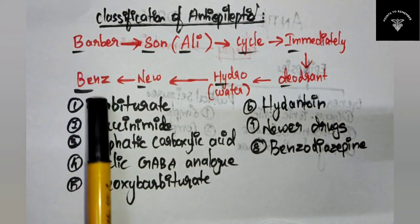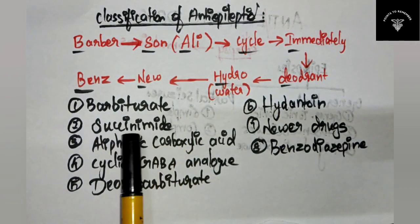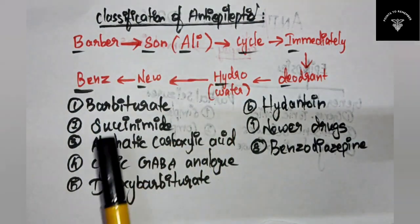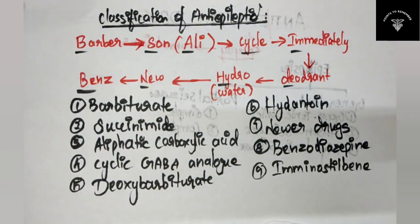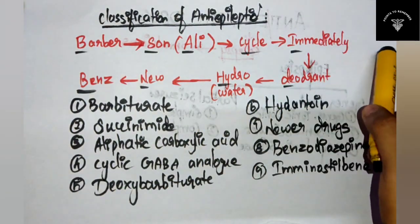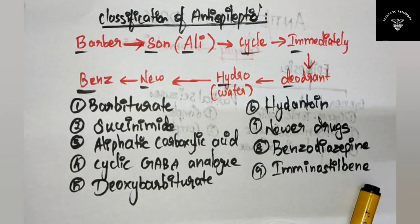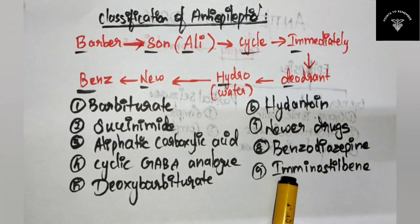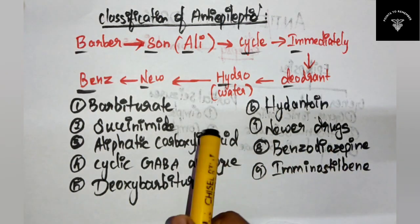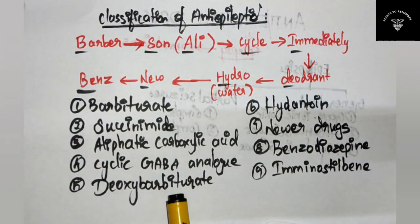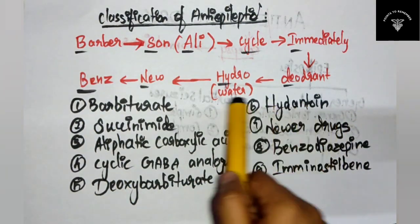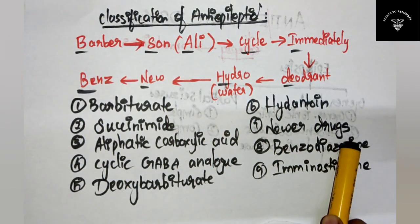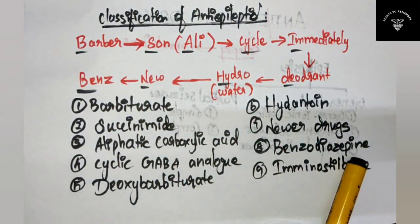To recap: barber = barbiturate; son = succinamide; Ali = aliphatic carboxylic acid; cycle = cyclic GABA analog; deodorant = deoxybarbiturate; hydro (water) = hydantoin; new = newer drugs; benz = benzodiazepine.